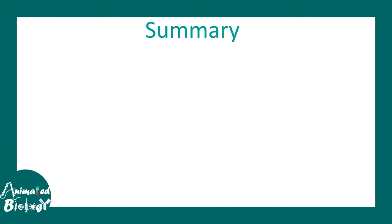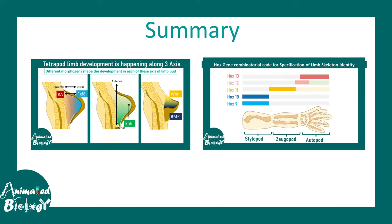In summary: the process of limb bud development is quite complicated and must be executed by a set of defined rules. Morphogen gradients set up rules along three developmental axes of the limb bud. Additionally, specific Hox gene codes define different regions of the limb — such as the zygopod, stylopod, and autopod. We can appreciate how precise molecular rules tune the development of the mammalian tetrapod vertebrate limb.